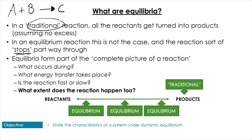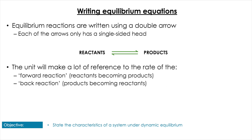Understanding the extent to which a reaction occurs helps us build a full picture of the reaction. We've already covered what occurs, what energy transfer happens, and how fast it is. Now with this extent we're going to complete that picture. Whereas we thought of these as 100% before, an equilibrium can fit anywhere on a sliding scale from 0 to 100.